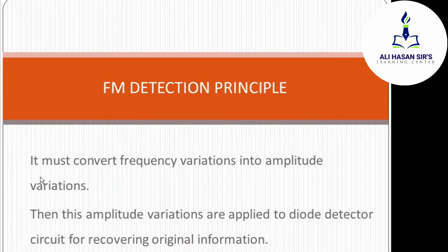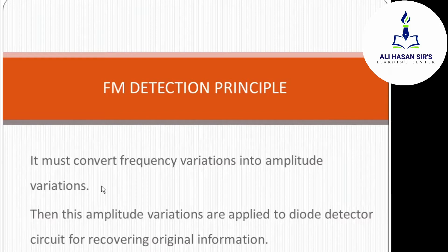As you can see in this slide, the principle of detecting the original signal from an FM wave states: first it must convert frequency variation into amplitude variation. So the very first step is that we must convert whatever frequency variation exists in the FM wave into its equivalent amplitude variation.